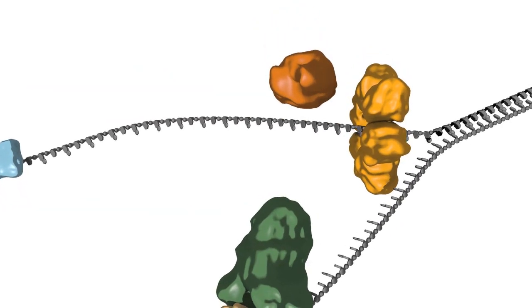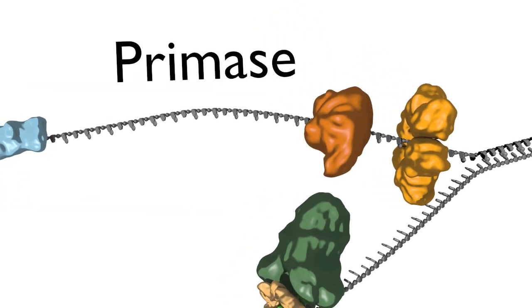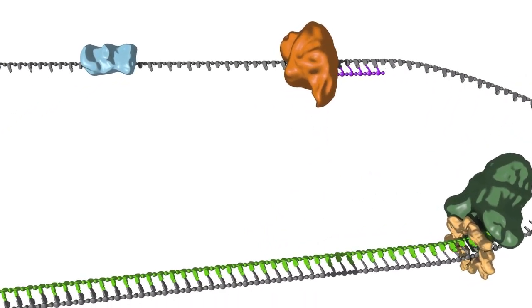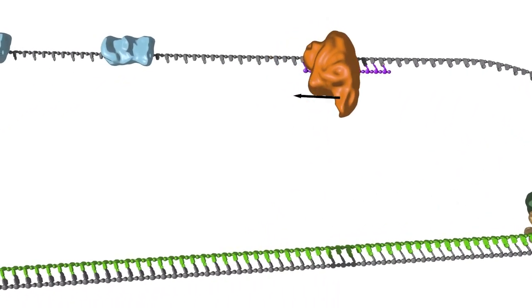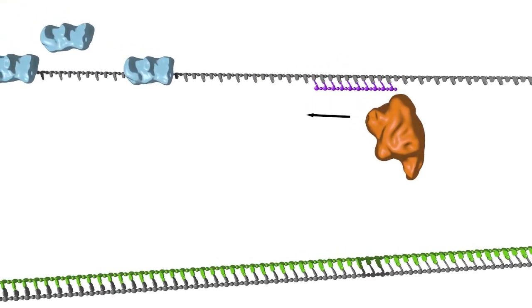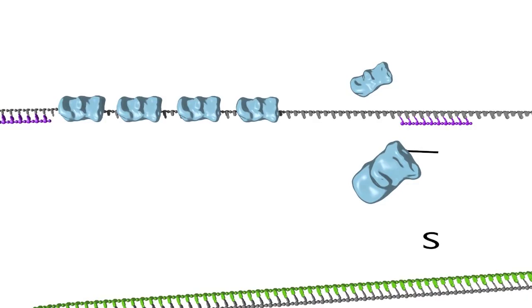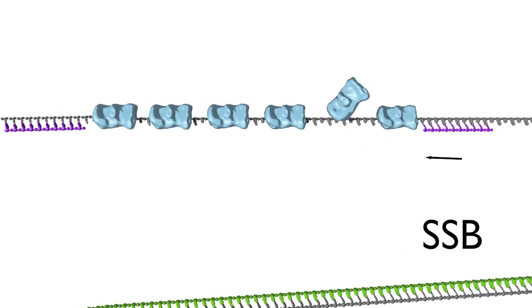Each Okazaki fragment is initiated by a primase that synthesizes a short RNA primer. This primer is later elongated by DNA polymerase. The single-stranded DNA between the newly made Okazaki fragments is bound by single-stranded binding protein, or SSB.